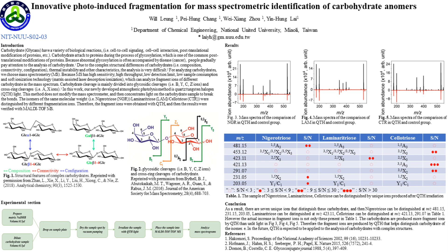In addition, the cross-ring cleavage bonds are particularly important for glycans, as they provide additional structural information, which potentially distinguishes isomers. In this work, we use a cross-tension halogen light source, meaning a QTH light source,